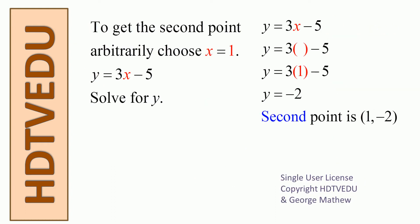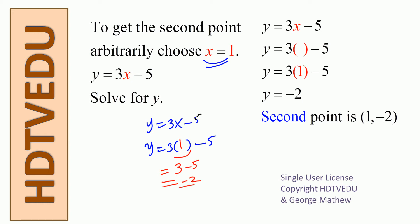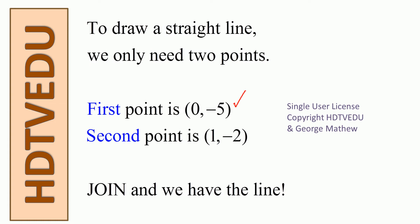Let's choose x equals 1. So y is equal to 3x minus 5. In the space occupied by x we substitute 1. What is 3 times 1? That is 3, minus 5, and that is negative 2. So when x equals 1, y equals negative 2. Our point is (1, negative 2).